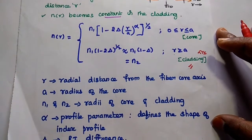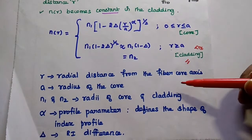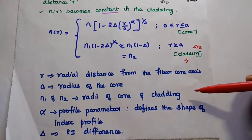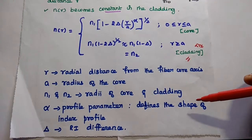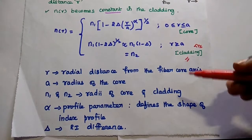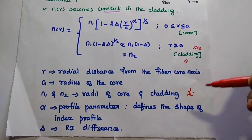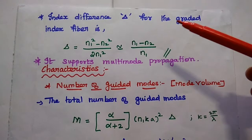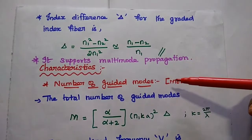In this expression, R represents the distance from the fiber core axis, A is the core radius, and N1 and N2 are the refractive indices of the core and cladding. Alpha is a very important parameter because it defines the shape of the index profile. Delta is the refractive index difference, and the index difference for the graded index fiber is given as (N1 minus N2) divided by N1.